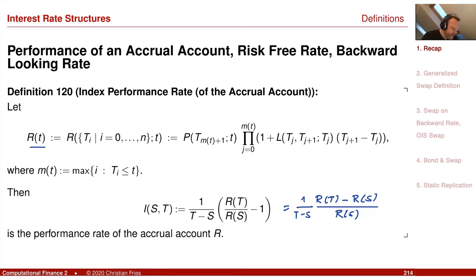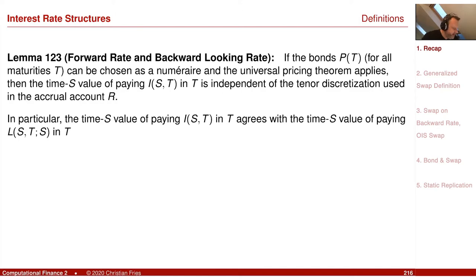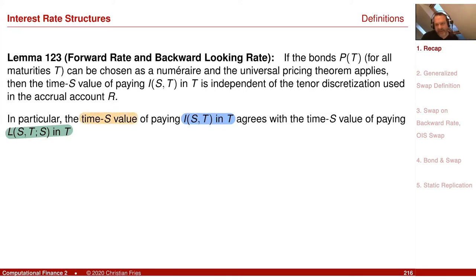We had the nice result that the expectation of receiving the backward rate — received at a final point capital T — equates with receiving the forward rate at that final point capital T. This is the time S expectation in the numeraire-relative sense. This equates, which means that if we have financial products that are linear in the backward rate, we can replace receiving the backward rate by receiving the forward rate.